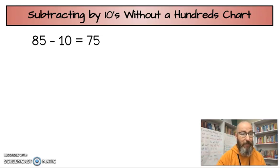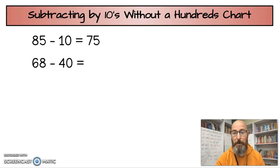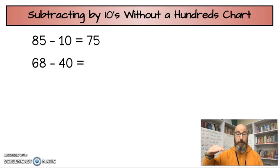Let's do a couple more. I'm about to run out of time, and I don't want to go too long. 68 minus 40. How many jumps? Four. 10, 20, 30, 40. So, I'm going to start at 68. I'm going to go up four times. 58, 48, 38, 28.